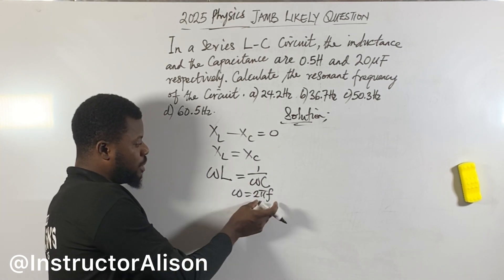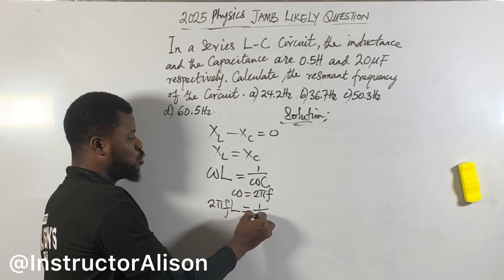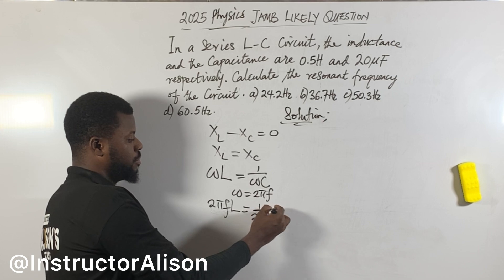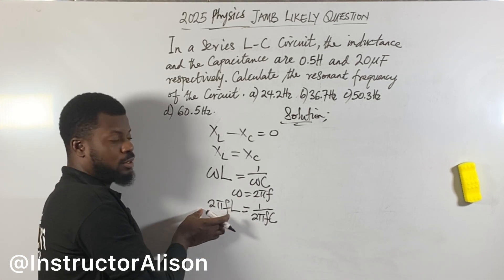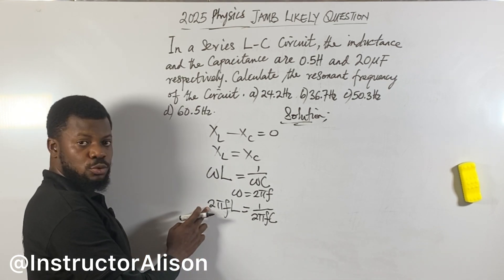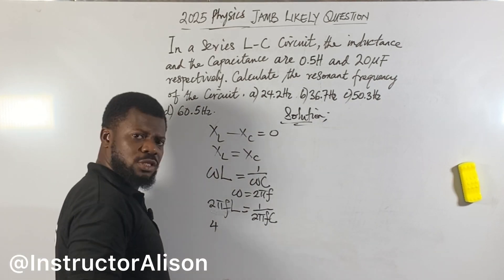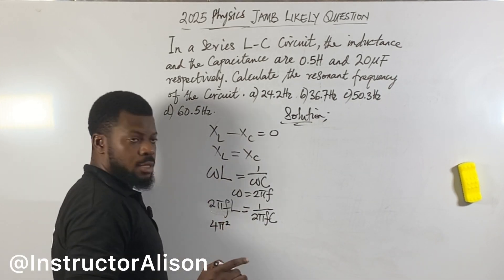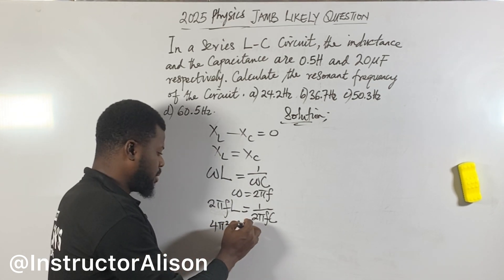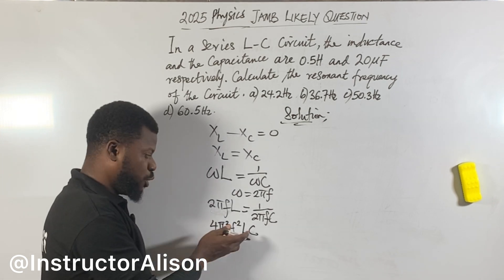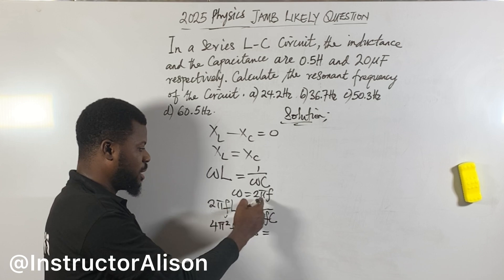So now we have: 2 pi f L = 1 over (2 pi f C). Cross-multiplying: multiply both sides. 2 times 2 gives 4. Pi times pi gives pi squared. F times F gives F squared. C times L gives LC. So we get 4 pi squared F squared LC = 1. Now since LC and CL are the same thing, we write LC because LC sounds better.